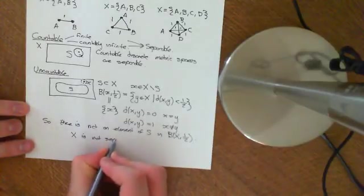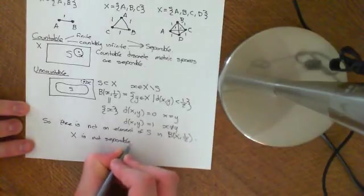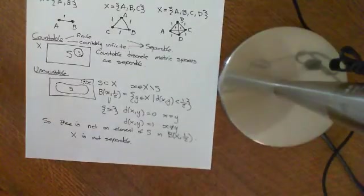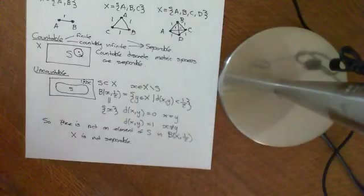So basically, discrete metric spaces are separable if and only if they are countable. If they're not countable, then they are not separable.